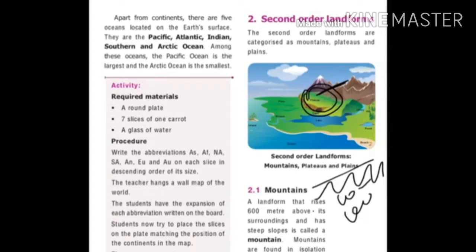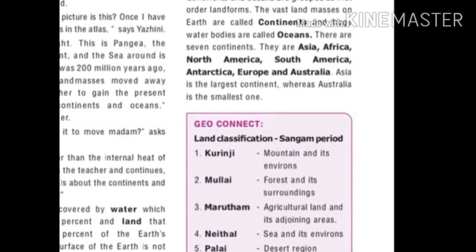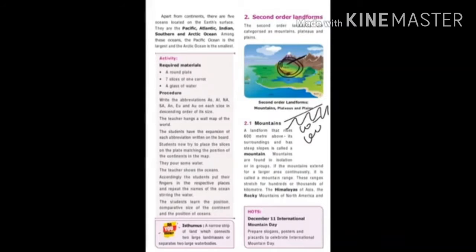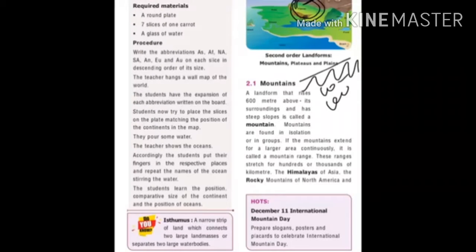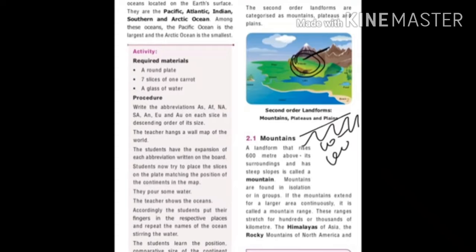Apart from continents, there are five oceans on the earth surface: Pacific, Atlantic, Indian, Southern and Arctic Ocean. The Pacific Ocean is the largest and the Arctic Ocean is the smallest. An isthmus is a narrow strip of land which connects two large landmasses or separates two large water bodies.